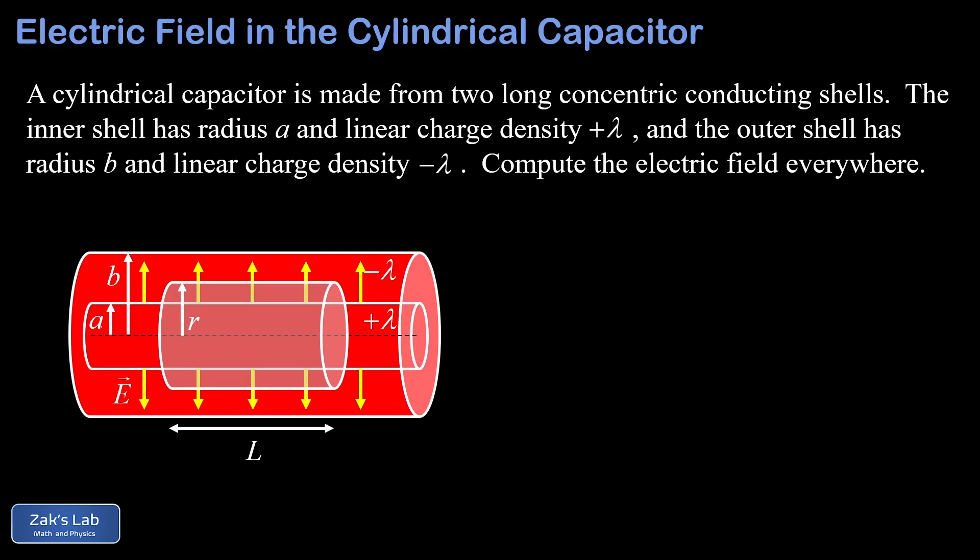Note that inside the smaller cylinder, inside of radius a, so when r is less than a, if we put a Gaussian surface inside that inner shell it wouldn't contain any charge in it, so we're guaranteed to have a zero electric field. So we're not really interested in that part.